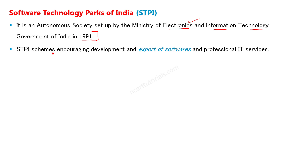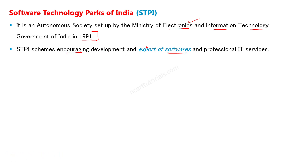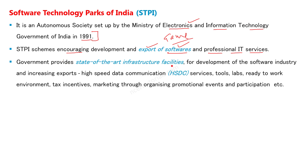STPI scheme को launch किया गया था software development, research, innovation को encourage करने के लिए और software export को बढ़ावा देने के लिए। आप जो antivirus खरीदते हैं, कोई application buy करते हैं, game खेलते हैं, animation देखते हैं, Photoshop चलाते हैं, music सुनते हैं, movie देखते हैं - वो सब software का ही नतीजा है। Government IT related professional services के export को support करती है और नए startups के लिए state-of-the-art infrastructure facilities software technology parks में उपलब्ध कराती है।